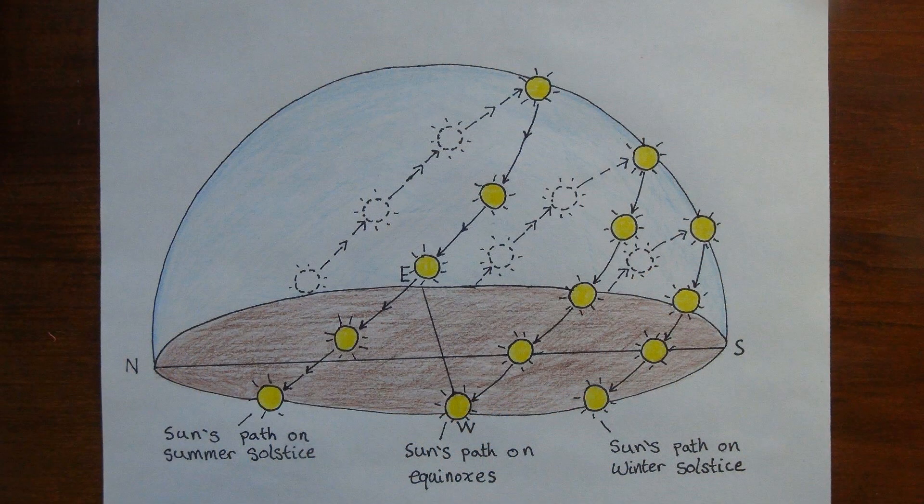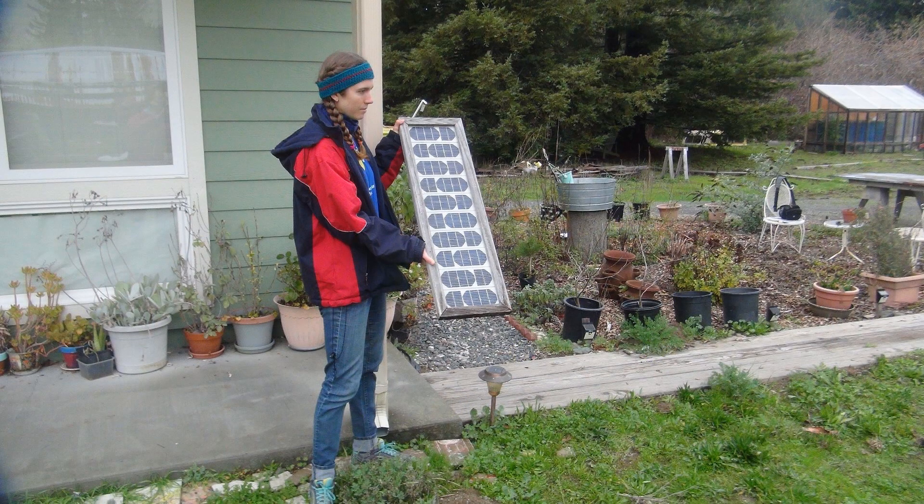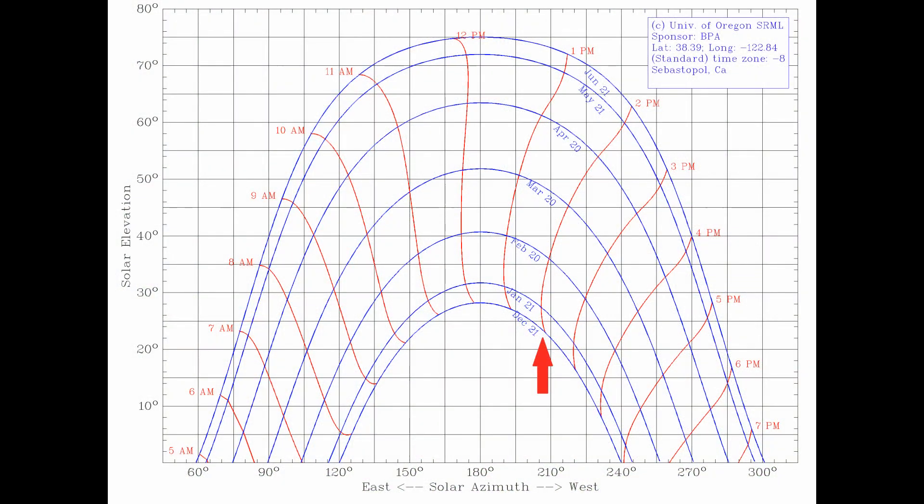We know that on the winter solstice, the sun will have the lowest arc in the sky. If we can put our solar panel in a place where it receives minimum shading on the winter solstice, then we know that it will receive minimum shading throughout the year. On the sun path chart, find the sun path for the winter solstice, December 21st. It will be the lowest arc on the graph.